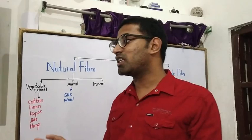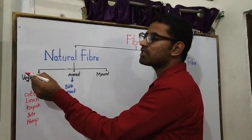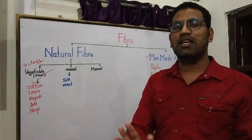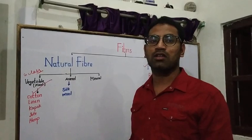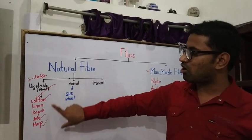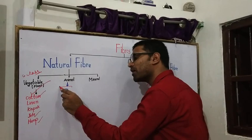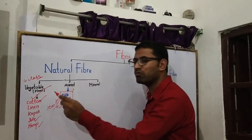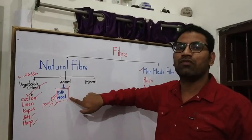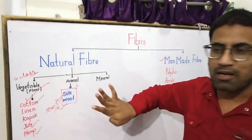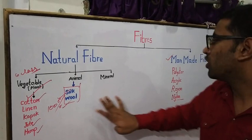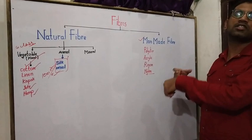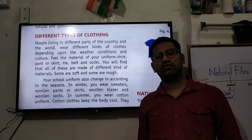In this chapter there are two important questions which are 100% exam questions: first, how we get silk; and second, how we get wool. In 6th class you studied plant fiber — cotton, jute, and hemp. In 7th class, the key topics are silk and wool, and you must study the complete steps of obtaining them for the exam.